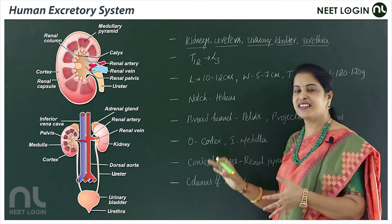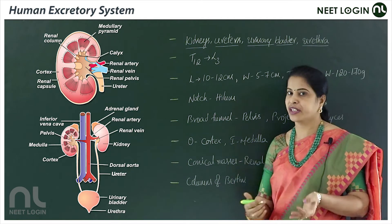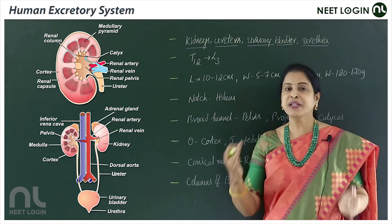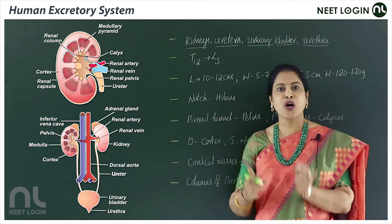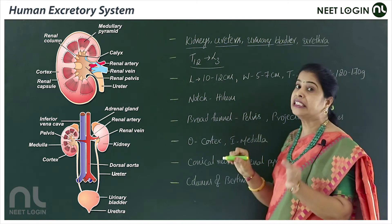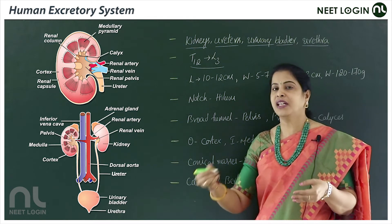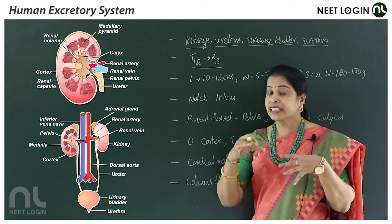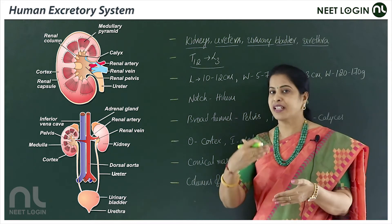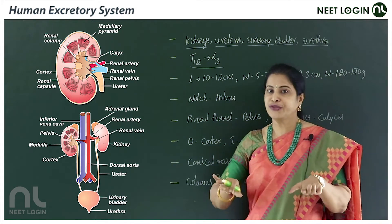Let's talk about the kidneys — where they are located and what their shape is. The shape of the kidney, even a small kid can say, is bean-shaped. The kidneys are reddish-brown color structures located between the last thoracic vertebra (T12) and the third lumbar vertebra.